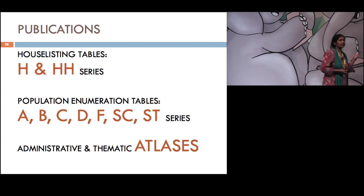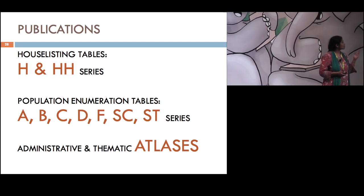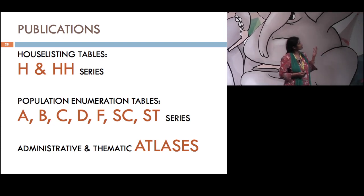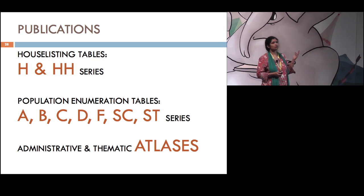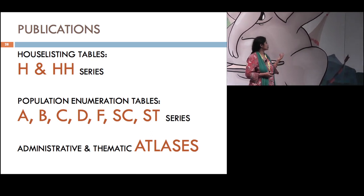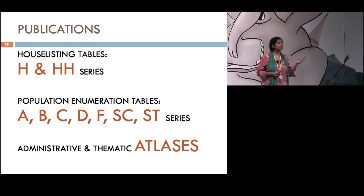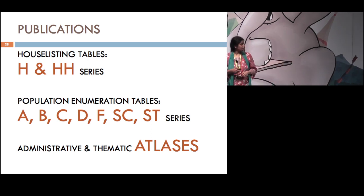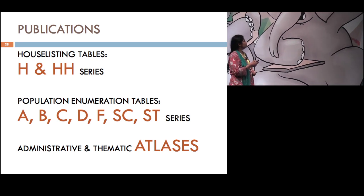These are the final tables that we published. The house listing tables, there are two series: H for house, HH for household. The population enumeration, these are the series. A is population, the numbers. B is workers. C is social and cultural tables. D is about migration. F about fertility. And the SC and ST series. Apart from that, we have some beautiful atlases, thematic as well as administrative.